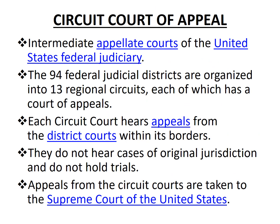Next in line is the Circuit Court of Appeals. The 50 states of the United States of America are divided into 13 regional circuits. All the states that come under those circuits can approach the Circuit Court of their jurisdiction. Each Circuit Court hears appeals from the District Courts that lie within their borders. In case of any dissatisfaction with the verdict, appeals from the Circuit Courts are taken to the Supreme Court of the United States of America.